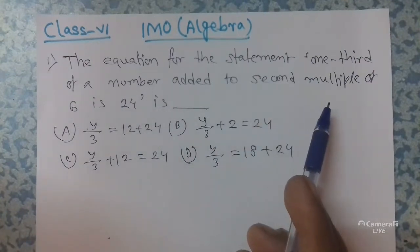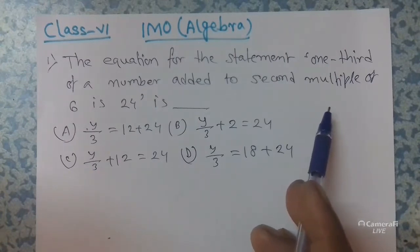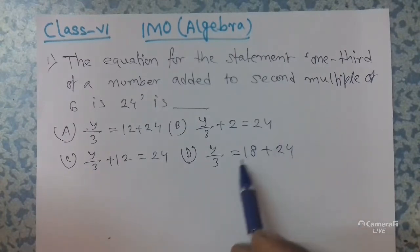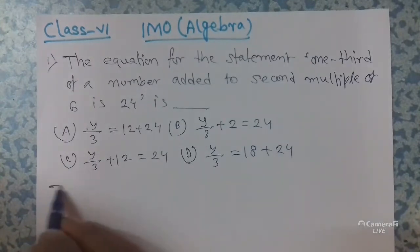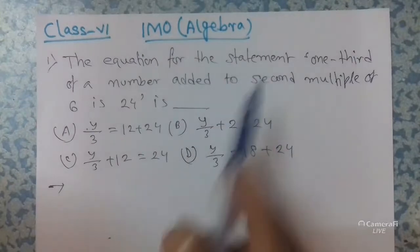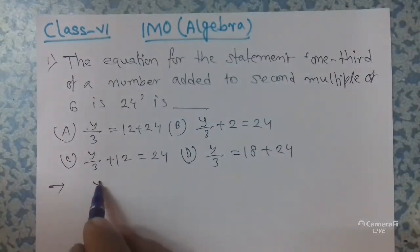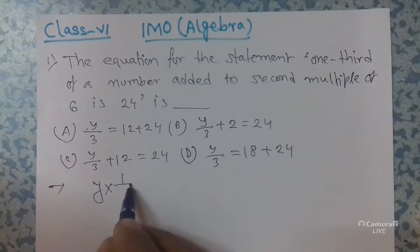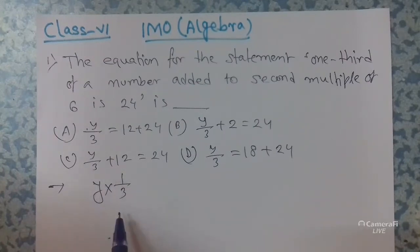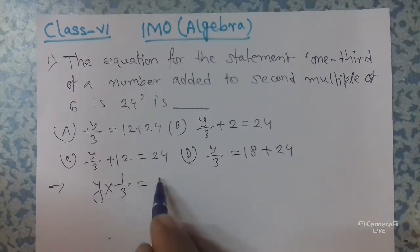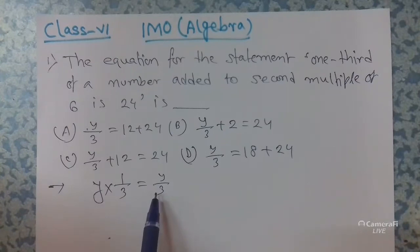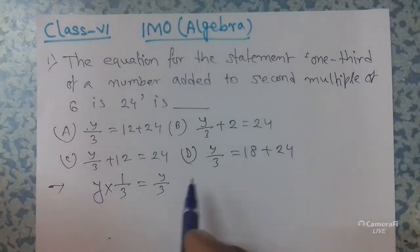The second multiple of 6 means 12, because 6 times 2 — first multiple is 6, second multiple is 12. So, if we take the number as y, then one third of a number means y multiplied by 1/3, which is y by 3.